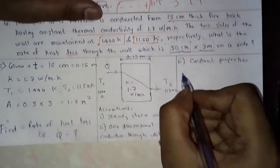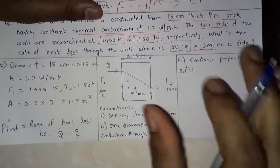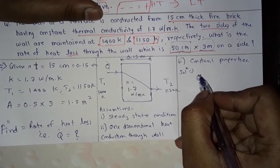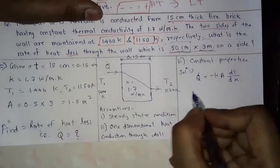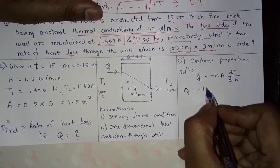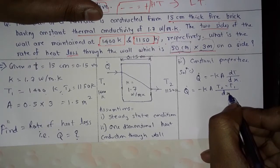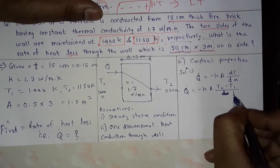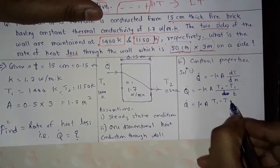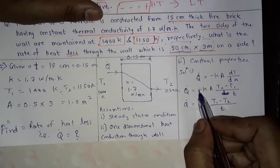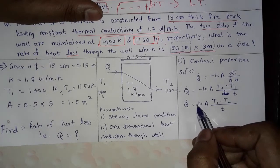Now let's solve this. According to Fourier's law, q-dot equals minus k A times dT upon dx, where dT is T2 minus T1 and dx is the thickness. This simplifies to q-dot equals k A times (T1 minus T2) upon t, interchanging the sign.